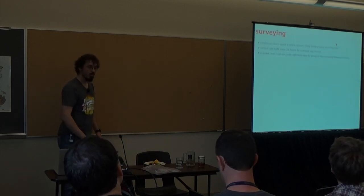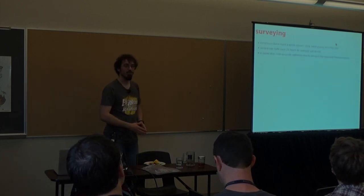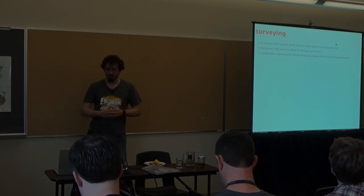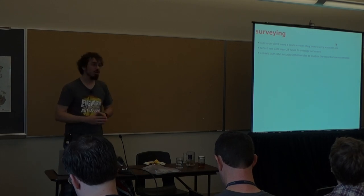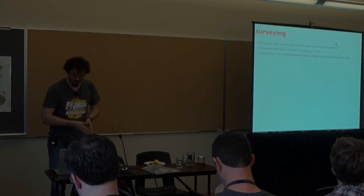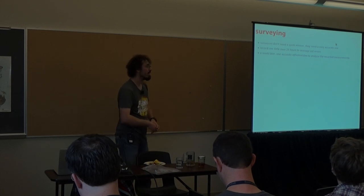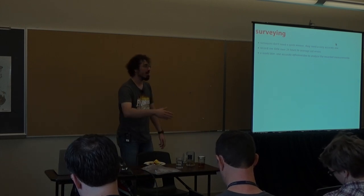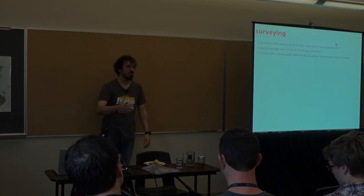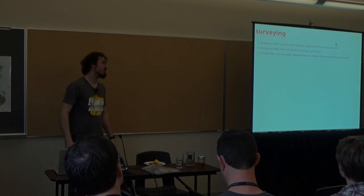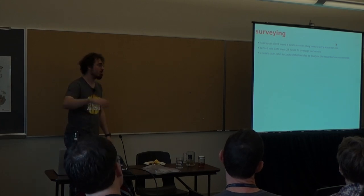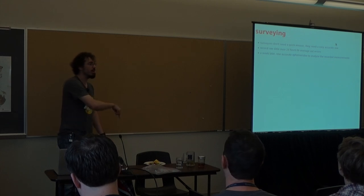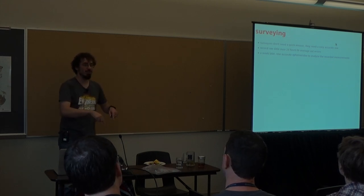So, this gives an option for surveyors, for instance, people who, or scientists for that matter, people who really care about exactly where their GPS receiver was. They don't need a quick answer, but they do need an accurate one. So, what you can do is, you can have your receiver recording data for, say, 24 hours, which lets you average out a bunch of the sources of error. And then, a week later, you can grab these precise ephemerides from the web and go back and look at all your raw data and say, well, if the satellites were actually here, then this is what these measurements mean.